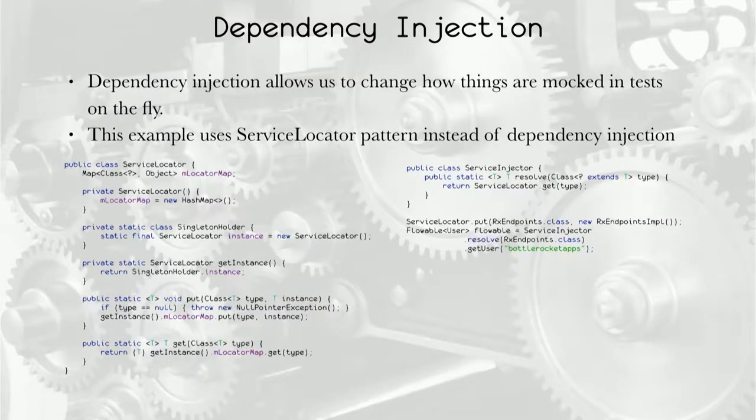So real quick, most people use dependency injection. But for this, service locator is going to be a little easier to read, at least for me. So down here is the important part, serviceinjector.resolve. That's the call that says we're getting something out of the service injector. We're getting an instance of our RxEndpoints class. And then we just make calls against that class. So in this case, we're calling get user.